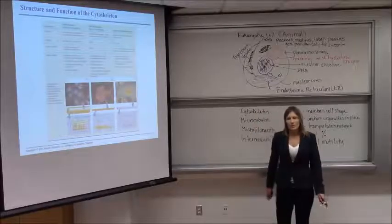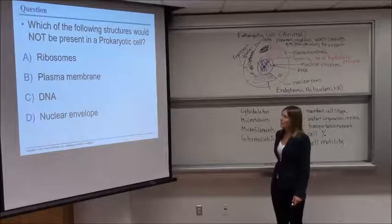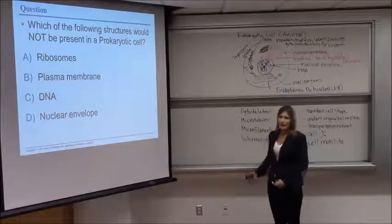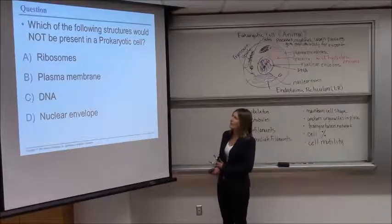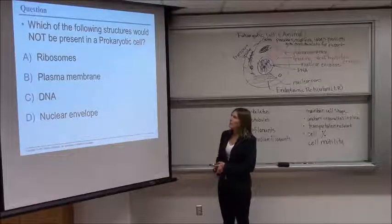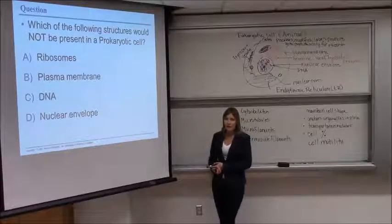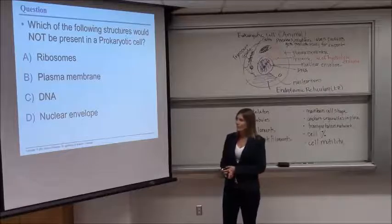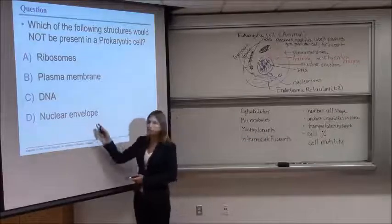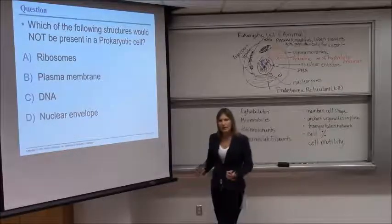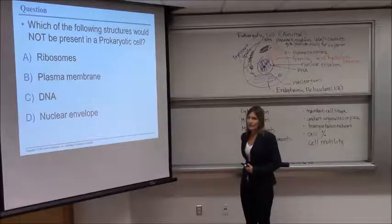Okay, so those are the major parts of the cell that you should know. Let's have a couple of quick review questions. Okay, let's start with a question about the differences between prokaryotic and eukaryotic cells, just on a very basic level. Which of the following structures would not be present in a prokaryotic cell? The correct answer would be D, the nuclear envelope. Remember, prokaryote means before nucleus, so no nucleus. In fact, no membrane-bound organelles in prokaryotes.